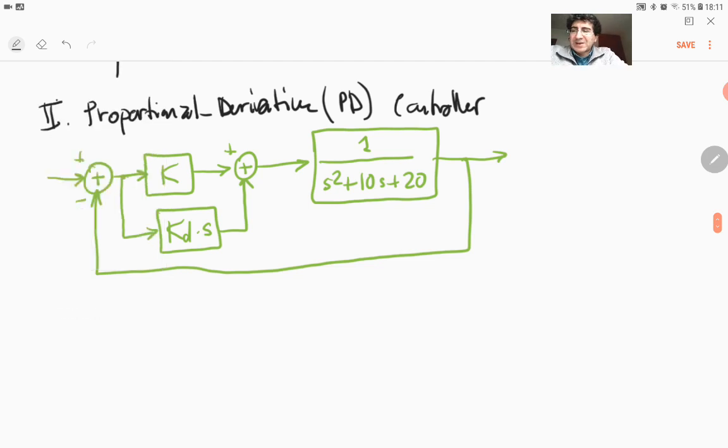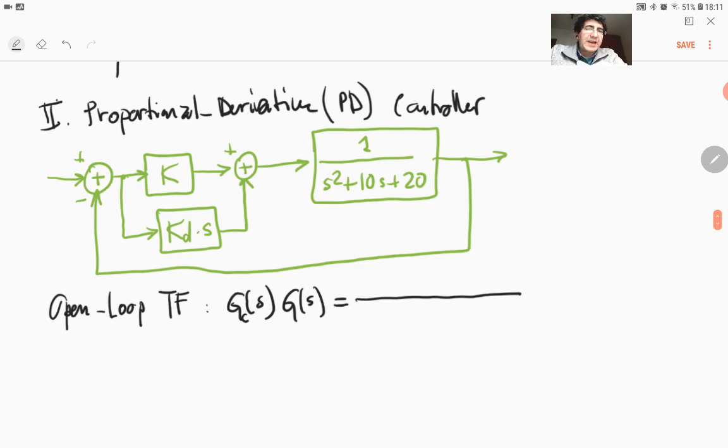So what is our open loop transfer function? Open loop TF is basically G of S, and that is given by these two terms. These two terms for the controller K and KDS are combined in the numerator K plus KDS, which gives us an open loop zero here. And also we have exactly the same denominator of the open loop transfer function.